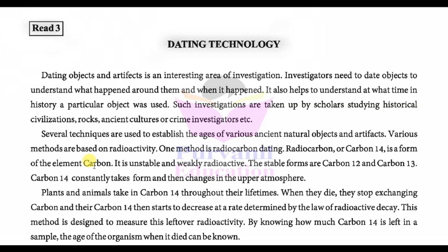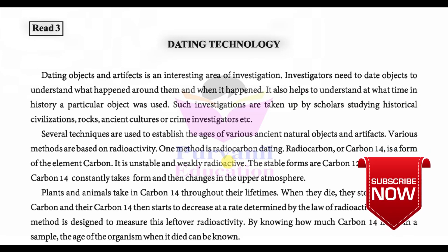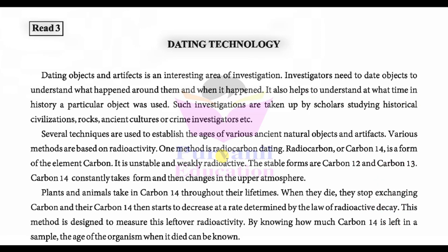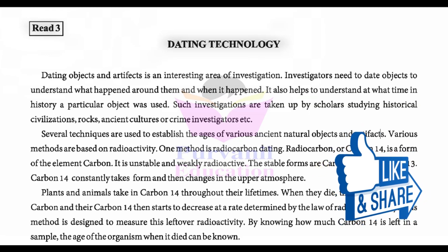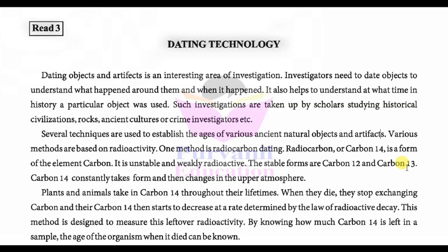Radio carbon — carbon 14 — is a form of the carbon element. It is unstable and weakly radioactive; it emits low-level radiation. The stable forms are carbon-12 and carbon-13. Carbon-14 constantly takes form and then changes in the upper atmosphere — it fluctuates depending on the atmosphere.